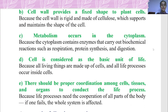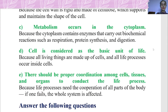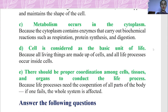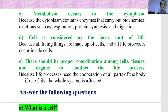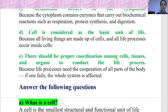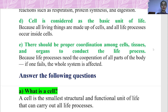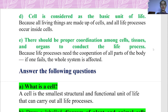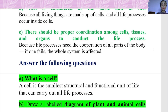The cell is considered the basic unit of life because all living things are made up of cells and life processes occur inside the cells. There should be proper coordination among cells, tissues, and organs to conduct the life processes, because life processes need the cooperation of all parts of the body — if one fails, the whole system is affected.